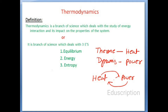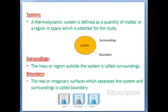Now coming to the definition: thermodynamics is a branch of science which deals with the study of energy interaction and its impact on the properties of the system. Energy means it may be work or it may be heat, and after the interaction, what are the impacts on the properties of the system — that is thermodynamics. This branch of science deals with three E's: equilibrium, energy, and if you know all three, this is all about thermodynamics.